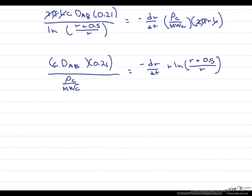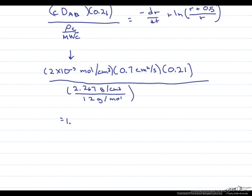The next thing that I like to do is go ahead and solve for that constant. So this part here is going to equal 1.6 times 10 to the minus 5 centimeters squared per second.